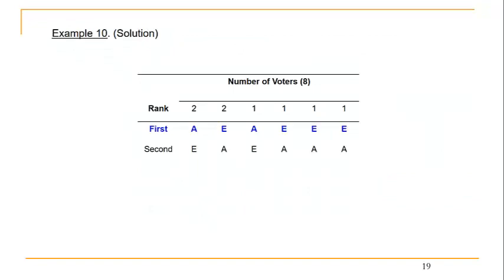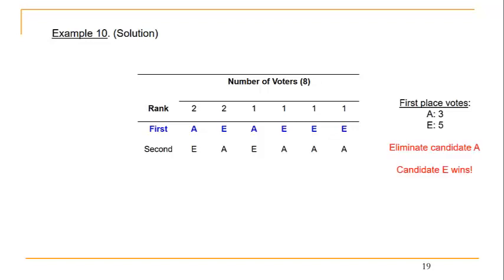When we delete candidates B, C, and D, only candidates A and E remain. Focusing on first place votes: A receives three and E receives five. Therefore candidate A is eliminated, and as the only candidate remaining, candidate E wins this election using the HAIR system.